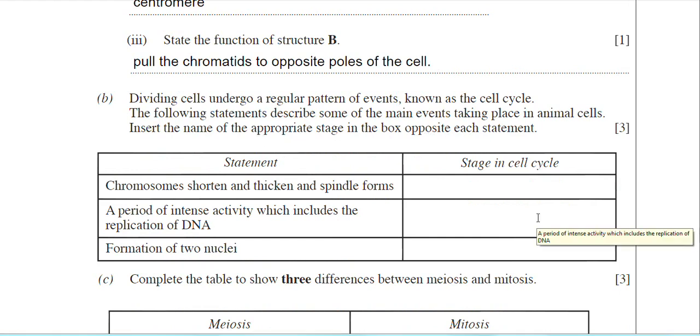Chromosomes shorten and thicken and spindle forms. This is really the first stage of metaphase where these events occur. That would be prophase where the chromatin really shortens, becomes thicker, the chromosomes become visible, and you get the start of the formation of the spindle and the spindle fibers.